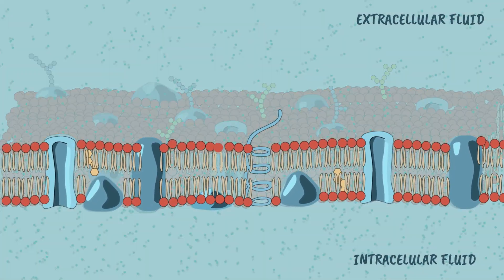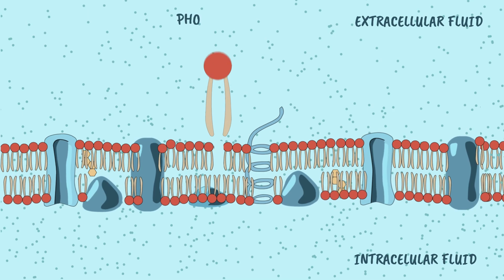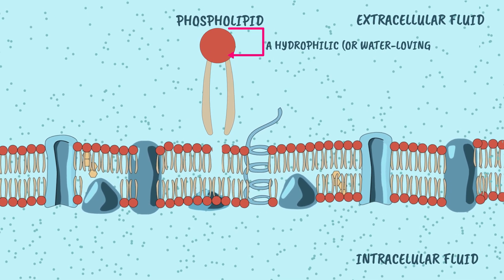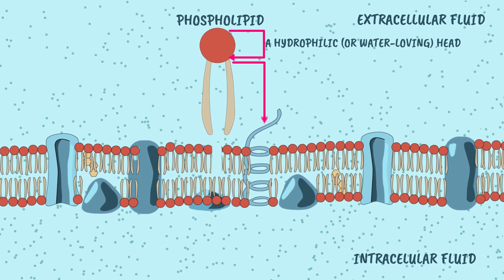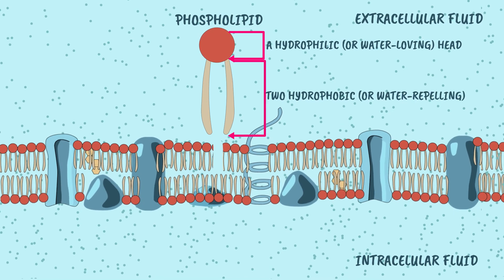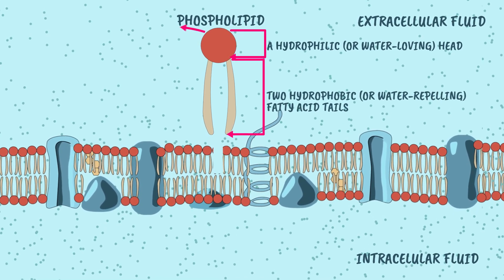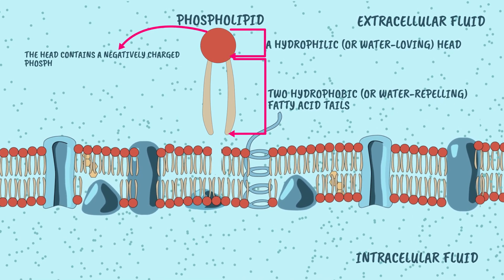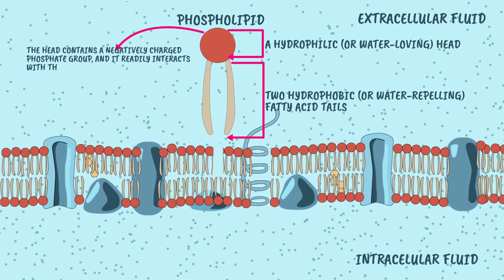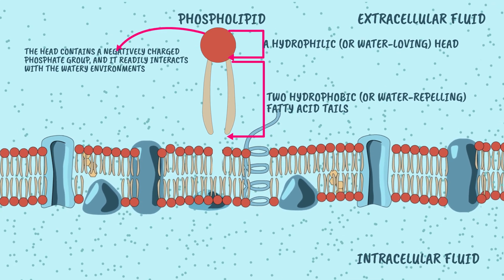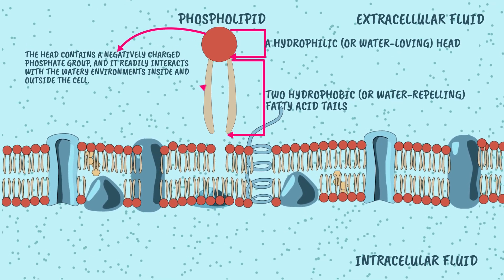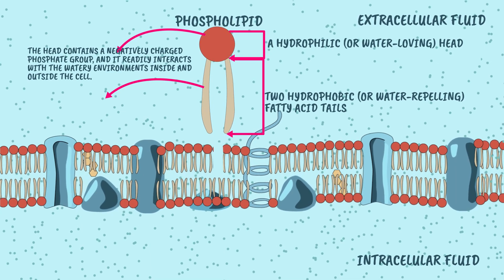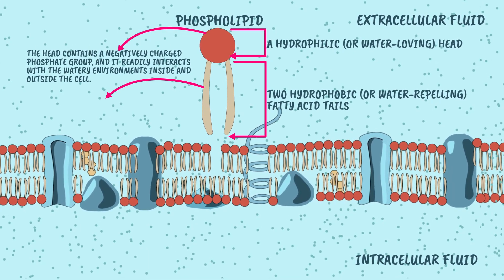The phospholipid bilayer: each phospholipid has two main parts — a hydrophilic, or water-loving, head and two hydrophobic, or water-repelling, fatty acid tails. The head contains a negatively charged phosphate group and readily interacts with the watery environments inside and outside the cell. Meanwhile, the tails avoid water, pointing inward and shielding themselves from the fluids.